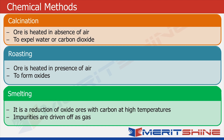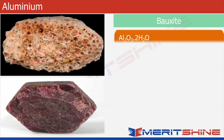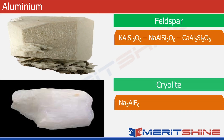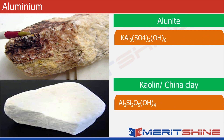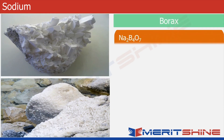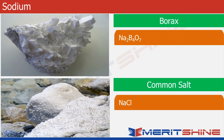Now let us look at various ores. Bauxite, corundum, feldspar, cryolite, alunite, and kaolin are all ores of the metal aluminium. Chile saltpetre, trona, borax, and common salt are all ores of sodium. So far we have covered only two elements and their ores, and there are many more to come.